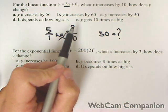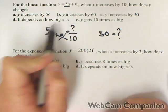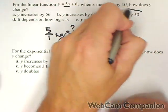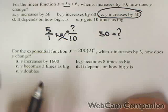The reason is because it's linear. It goes up five for every one. So if it goes up by 10, then it goes up by 50. So we expect y to increase by 50 because it's linear.